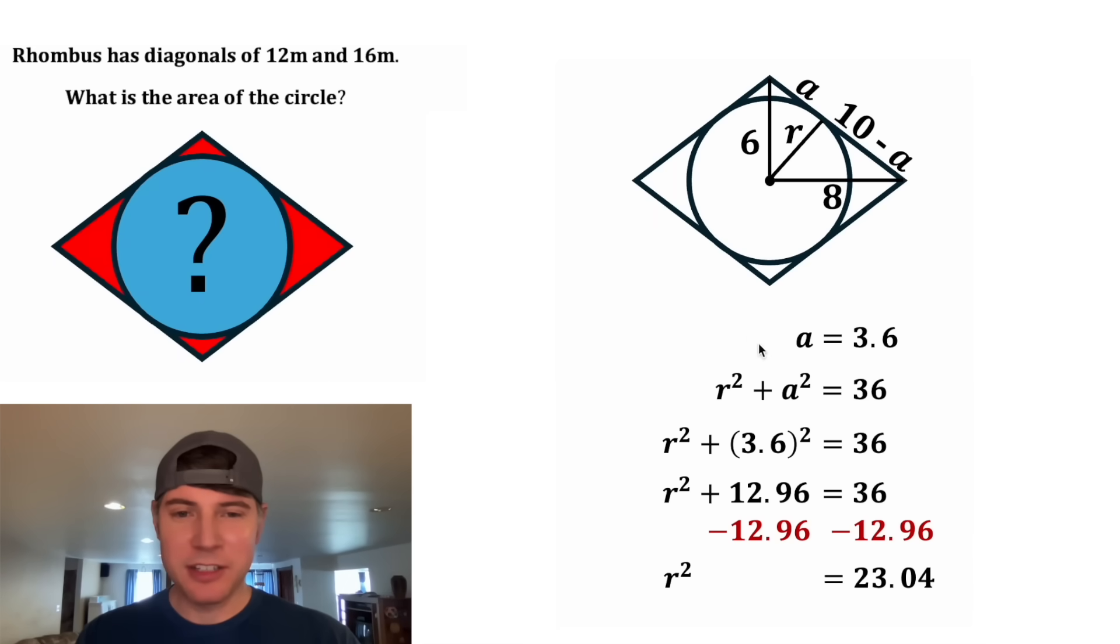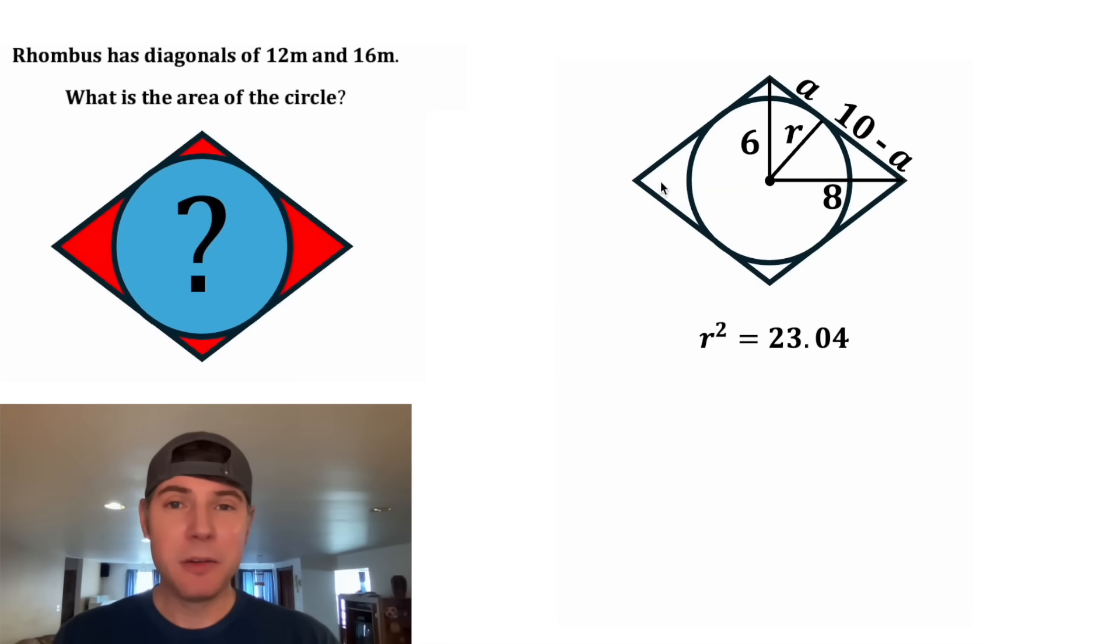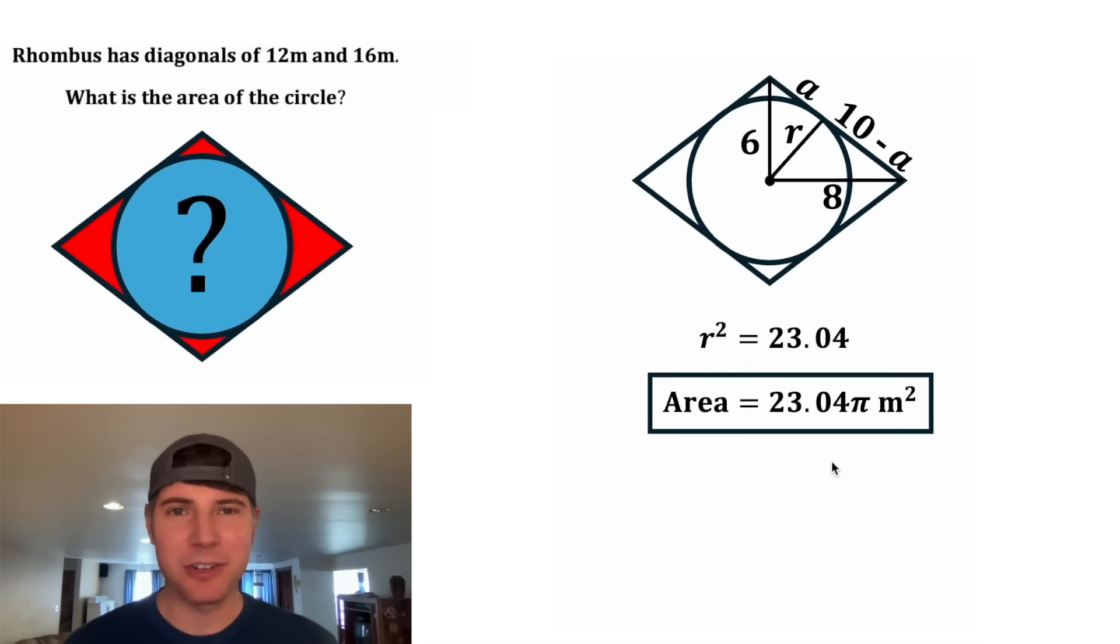This looks important. Let's clean this up a little bit, and let's bring this up here. Ultimately, we want to find the area of the circle. The area of the circle is pi R squared. We now know what R squared is equal to. So in the place of this R squared, let's plug in 23.04. And this is the answer to our question. The area is equal to 23.04 pi meters squared. Let's put a box around it, and the approximate area is 72.38 meters squared. How exciting.